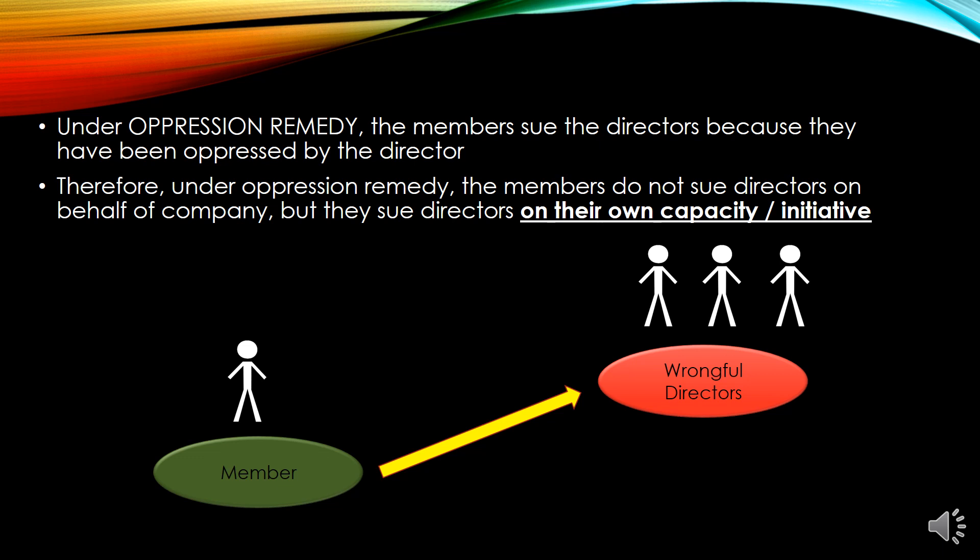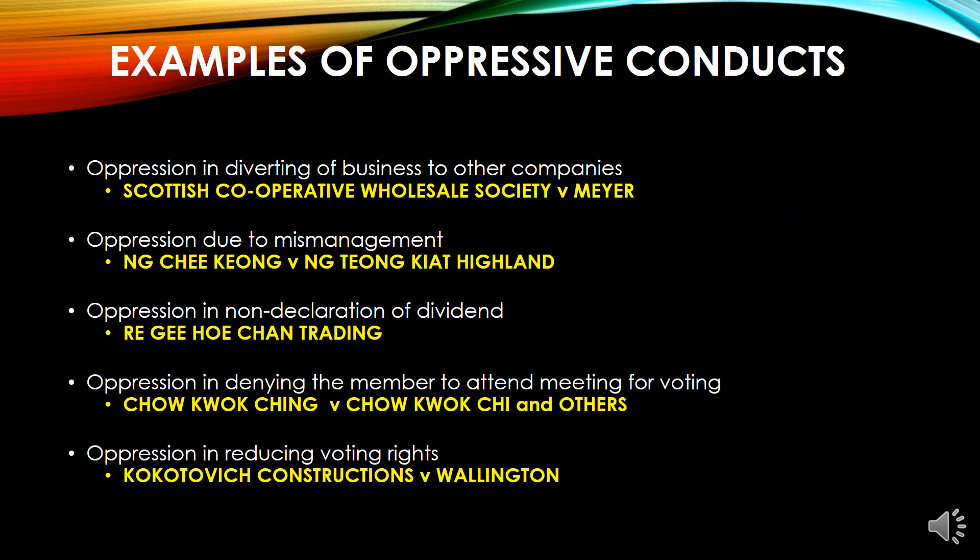The members sue the directors because they have been oppressed by the directors. Under oppression remedy, the members do not sue the directors on behalf of the company but sue on their own capacity or initiative. Examples of oppression conduct include: diverting of business to other companies (Scottish Cooperative Wholesale Society v Mayors), oppression due to mismanagement (Ng Chi Kiong), non-declaration of dividend (Re Gi Ho Chan Trading), denying members to attend meeting for voting (Chow Wo Ching), and reducing voting rights (Kokotovich Constructions v Wellington).